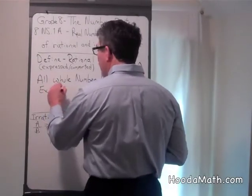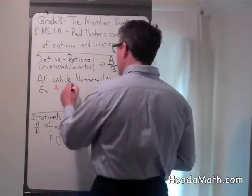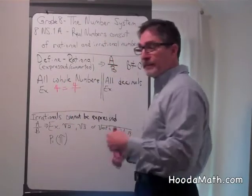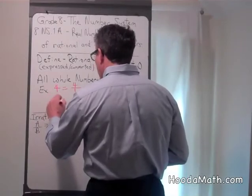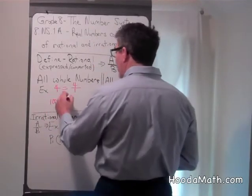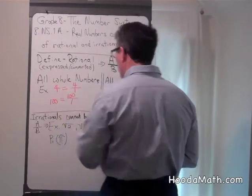4 can be expressed as 4 divided by 1. A whole number 100 can be expressed as the ratio or fraction of 100 divided by 1.